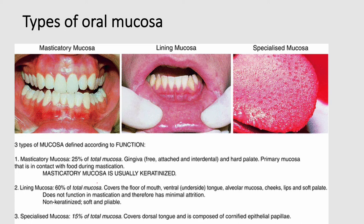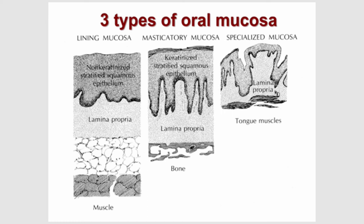The lining mucosa does not function in mastication, so it has minimum attrition; it is non-keratinized, soft, and pliable. The specialized mucosa forms 15 percent of the total mucosa and covers the dorsal surface of the tongue; it is composed of cornified epithelial papillae and will be studied in detail in the histology of the tongue. Microscopically, lining mucosa shows non-keratinized stratified squamous epithelium over lamina propria and submucosa with a muscle layer, while masticatory mucosa shows keratinized stratified squamous epithelium resting upon lamina propria with bone deep to it.